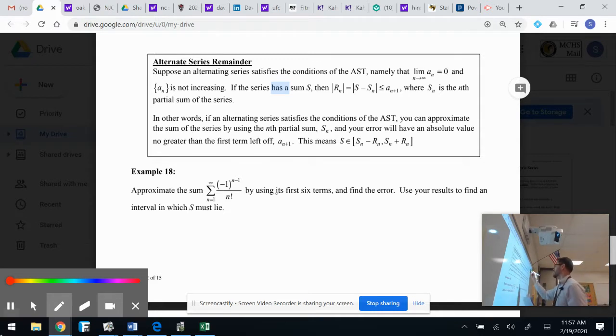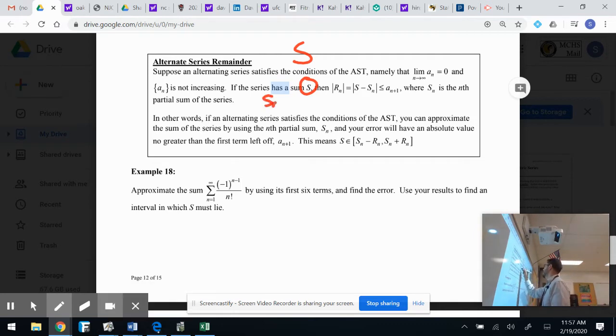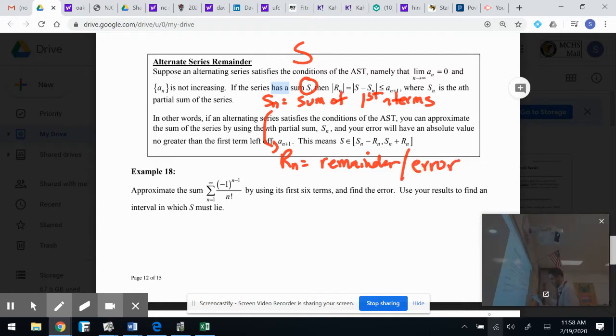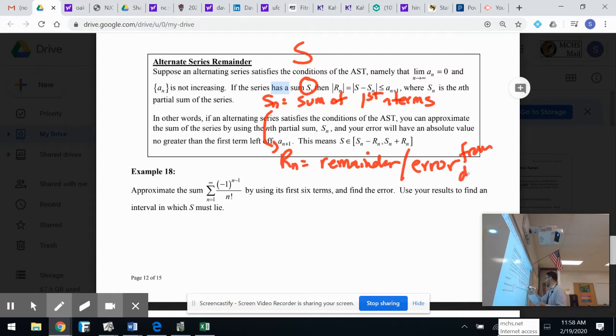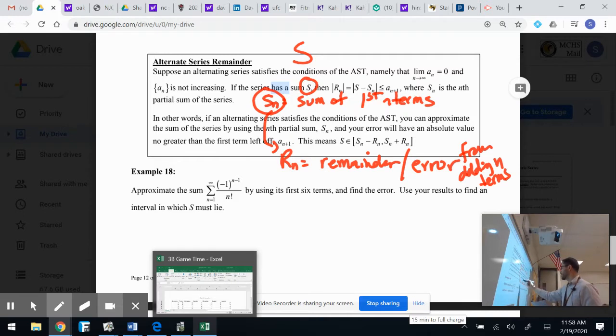There's a couple things we need to know before we get introduced to all this stuff. S, that is the sum. Remember, we cannot find the sum of any of these guys unless it's a geometric series. So what we do instead is we take what we call a partial sum, and we use that partial sum, and we're able to find what we call a remainder to give us where the sum would be. We're able to find a bounded, in between these two numbers. We need to know what S sub N stands for. S sub N stands for the sum of the first N terms. And then R sub N stands for the remainder of those other terms, or we call it the error.